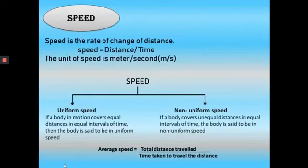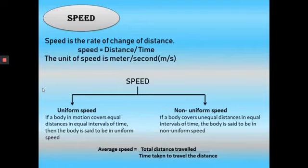Next we will see what is called speed. Speed is the rate of change of distance. Speed is equal to distance divided by time. The unit of speed is meter per second. Speed is classified into uniform speed and non-uniform speed.